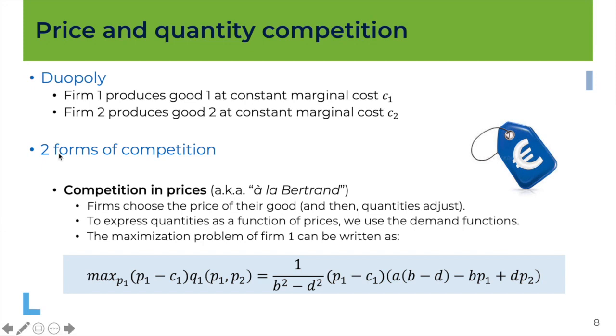So we've got two firms, firm one is producing good one, firm two is producing good two, and we assume here for simplicity that the marginal costs, so the extra costs of producing slightly more, this marginal cost is constant for both firms, but we don't exclude the possibility that the cost of the two firms be different, so we call c1 the cost of firm one, and c2 the cost of firm two.